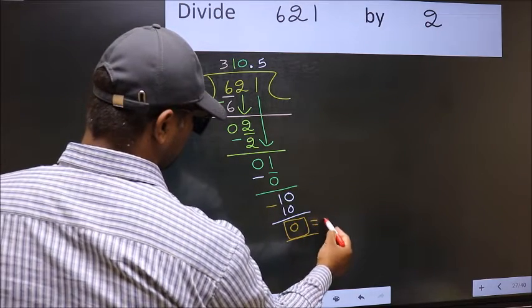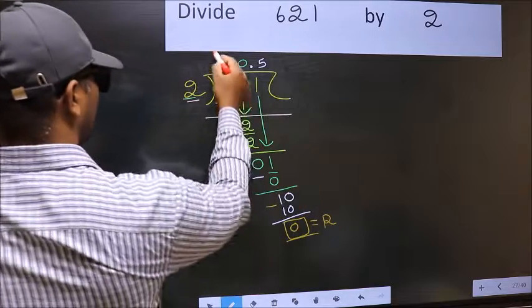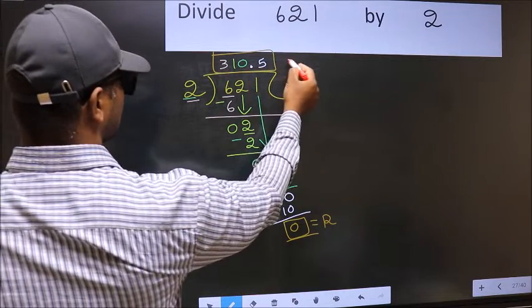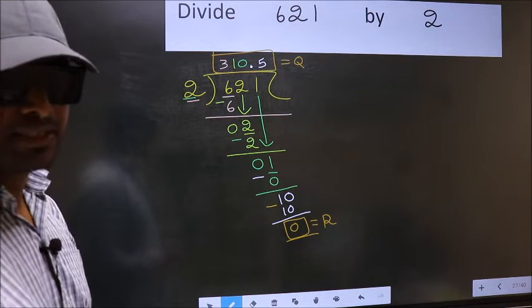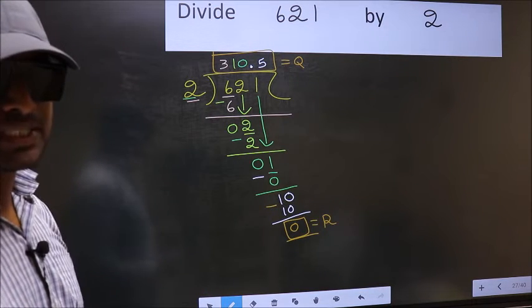So this is our remainder. And this is our quotient. Did you understand where the mistake happens? You should not do that mistake.